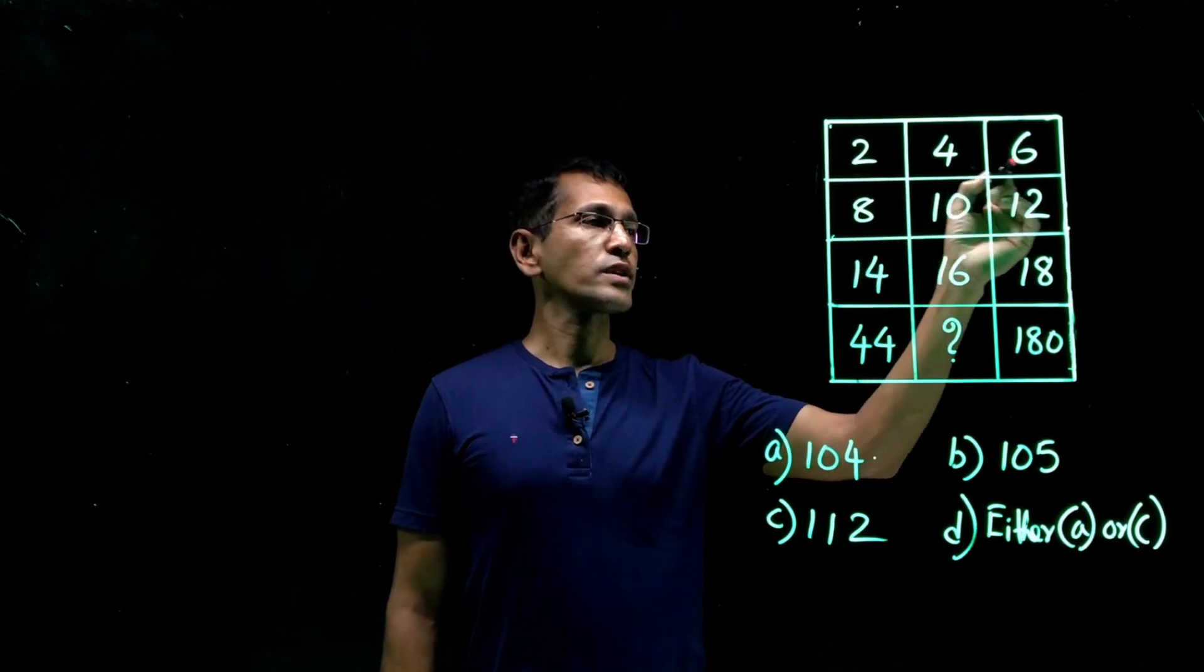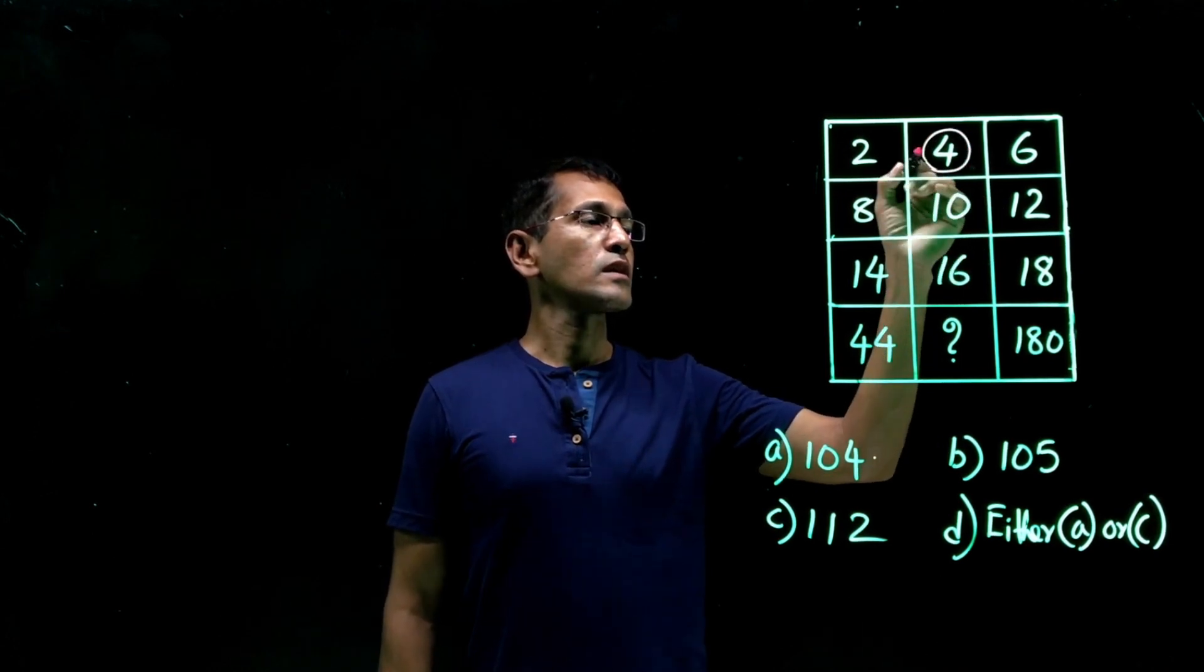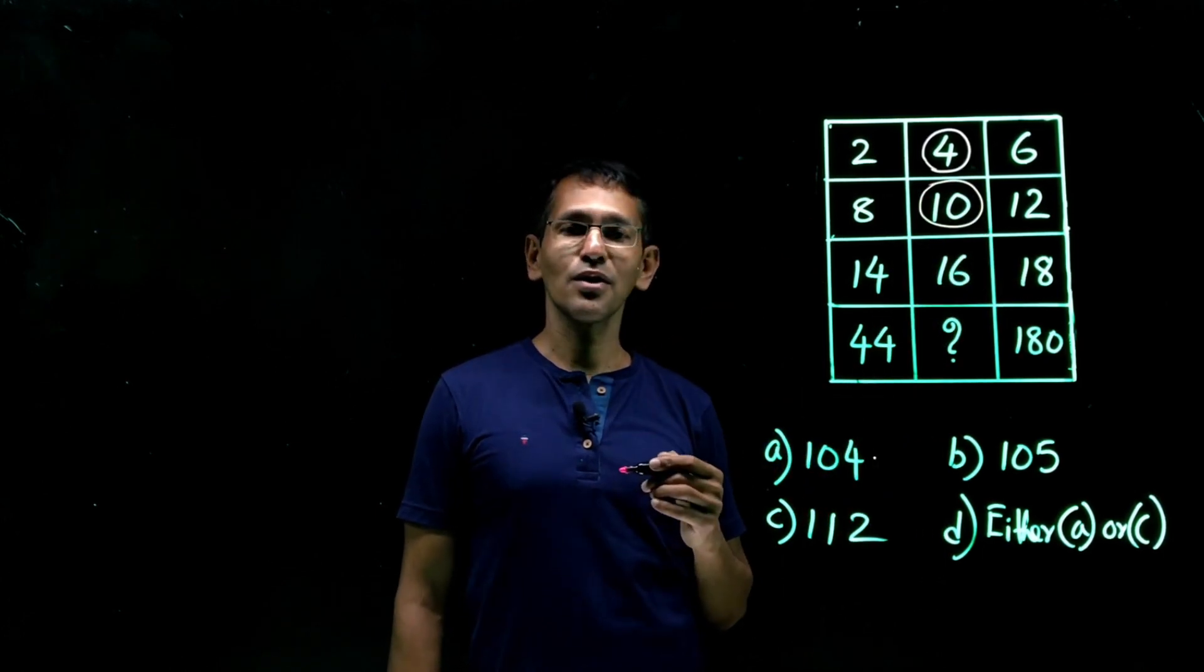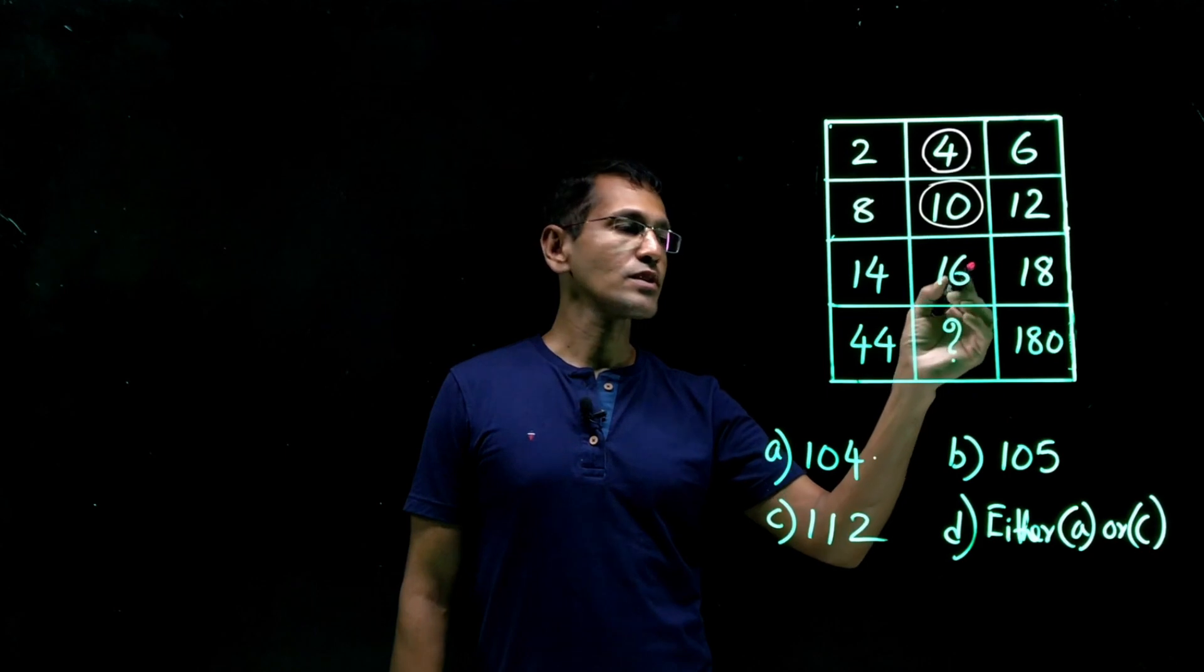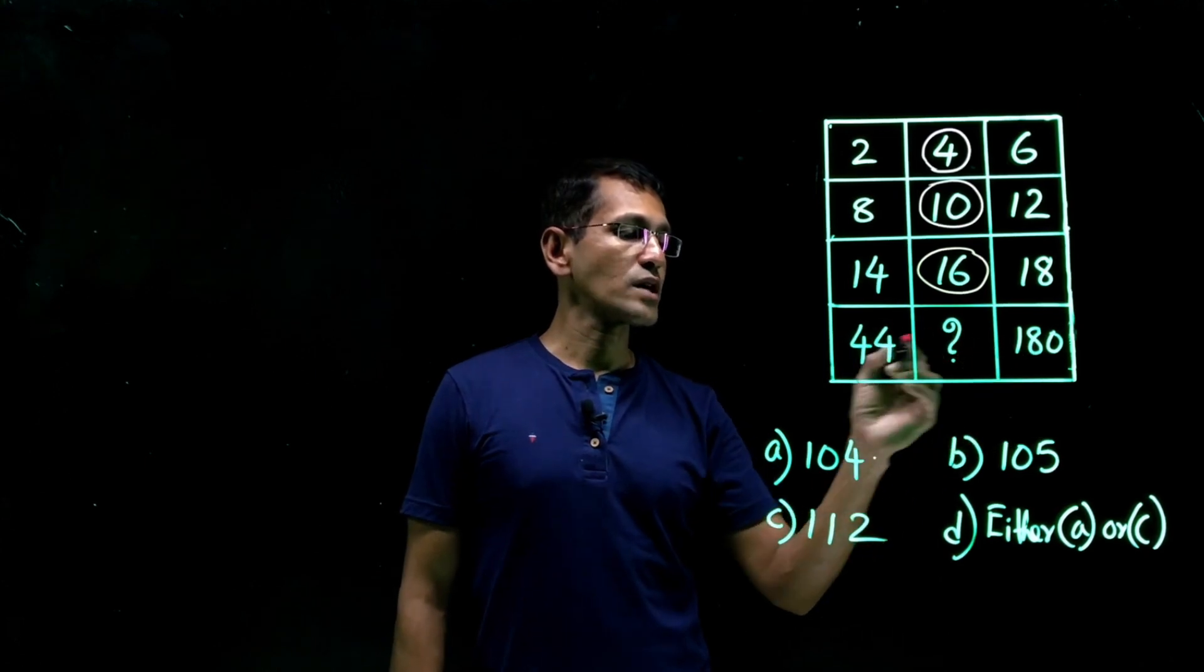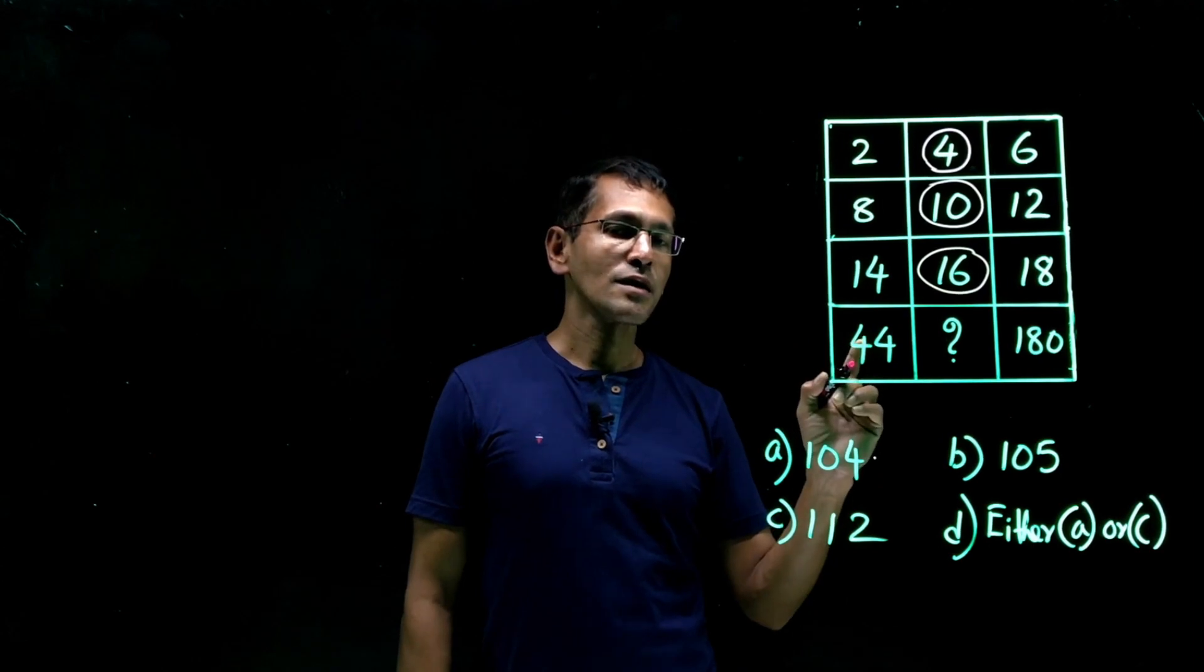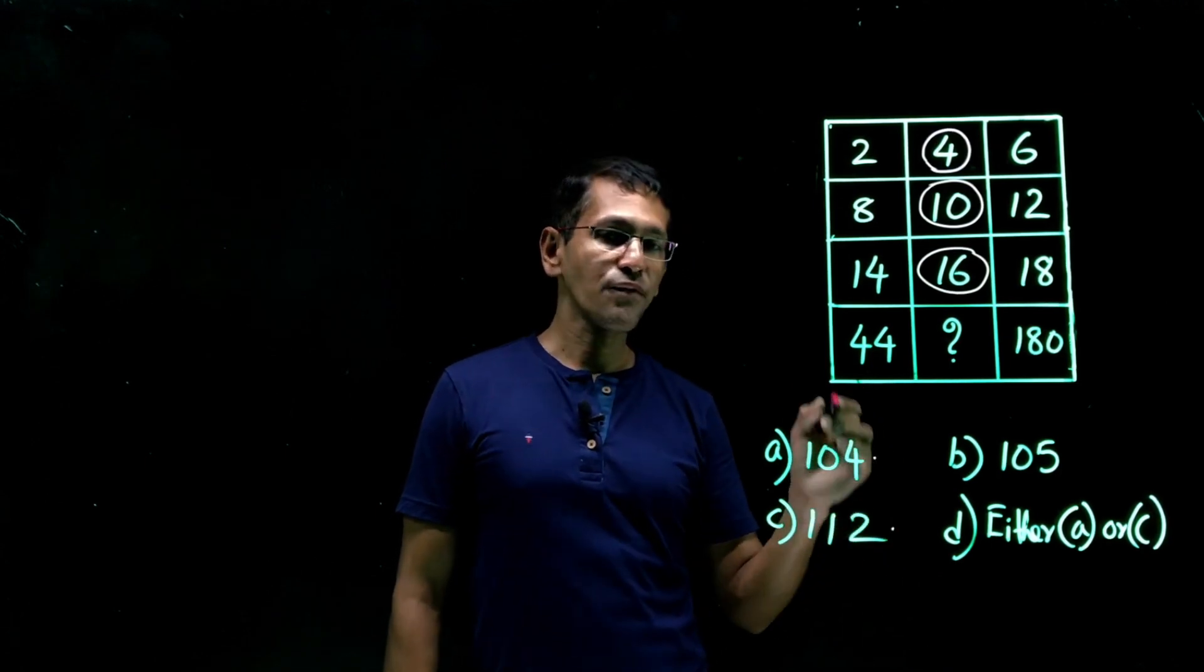Look at it. Row-wise, 2, 4, 6. 2 plus 6 by 2 is 4. So this column, I mean, the middle column, the middle column is the average of these two numbers. Look at here. 8 and 12. 8 and 12, 20. 20 by 2? 10. Perfectly alright. How about this? 14 and 18. 14 and 18? That is 32. 32 by 2? That is 16. How about like 44 and 180? 180 plus 20 is 200. So 44, we have taken 20 from 44. Balance is 24. So 180 plus 44 is 224. Half of it, half of 200, 100. 24 half, 12. So 112. So 104 is the correct answer. So a perfect answer would be either A or C.